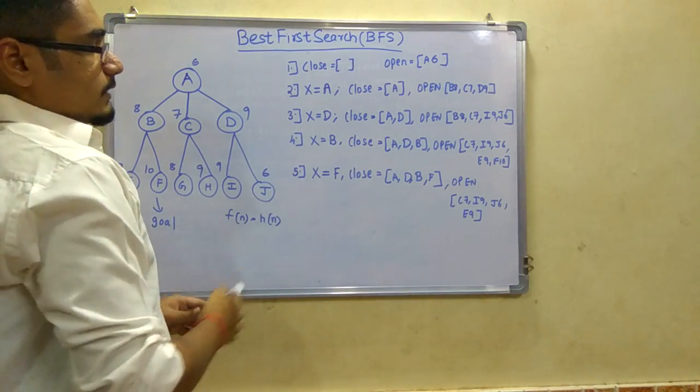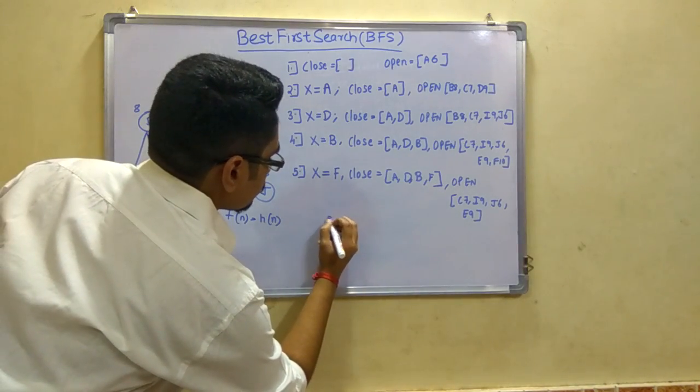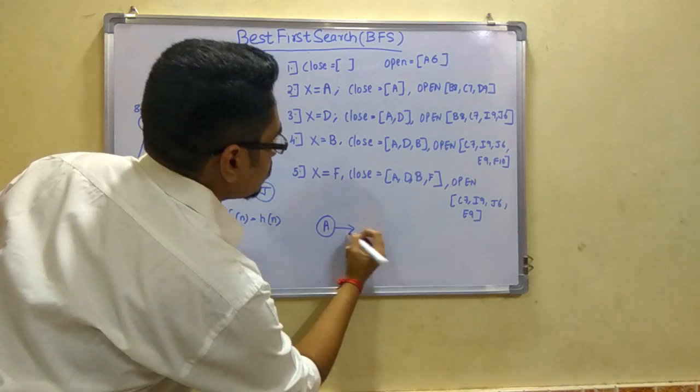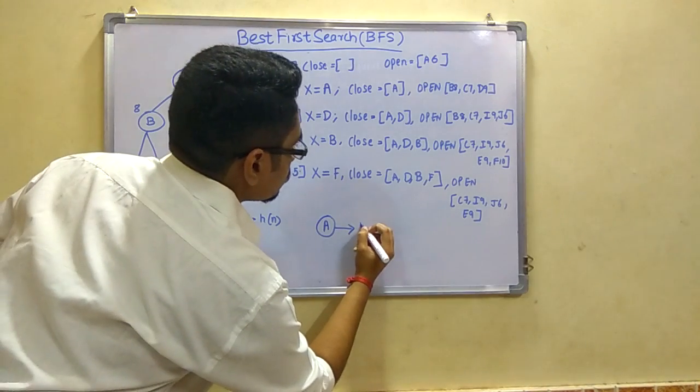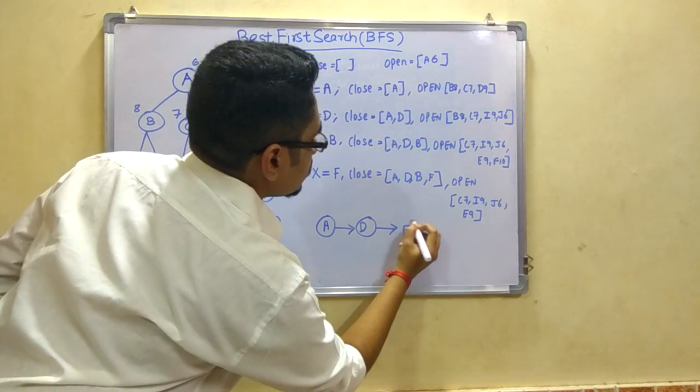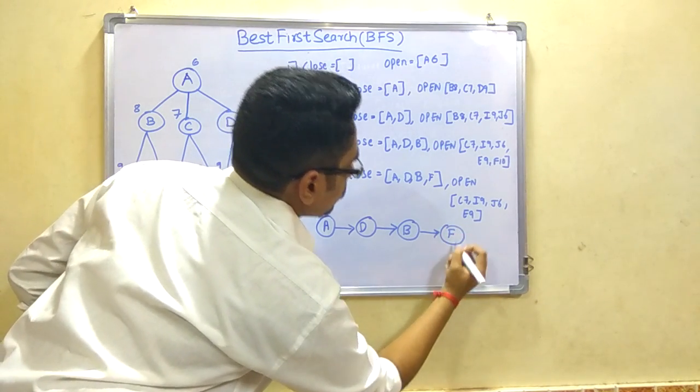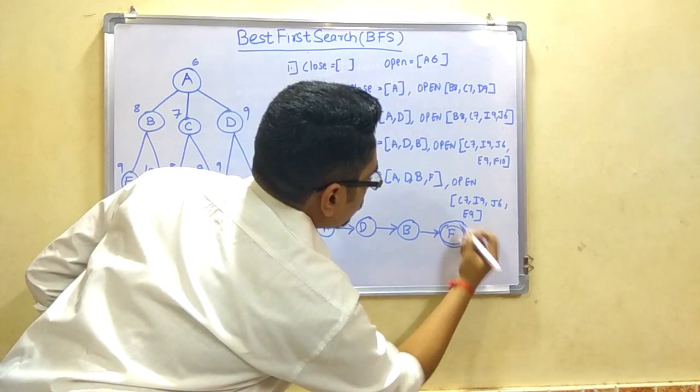Our path would be - we have taken A node, from A we went to D, from D we went to B, and from B we went to F. So F is our goal node.